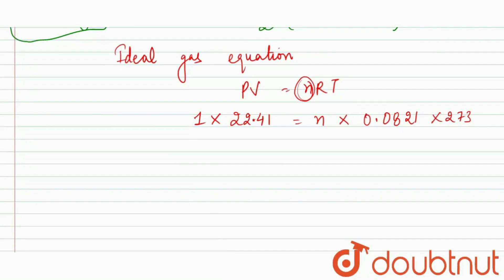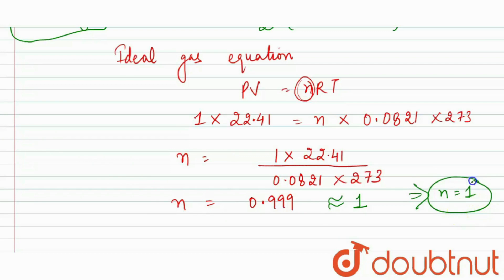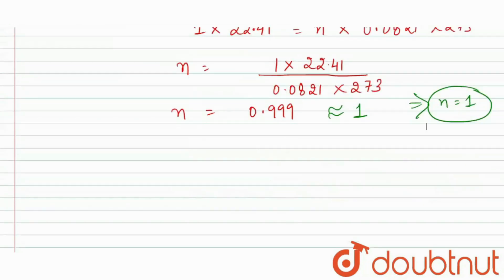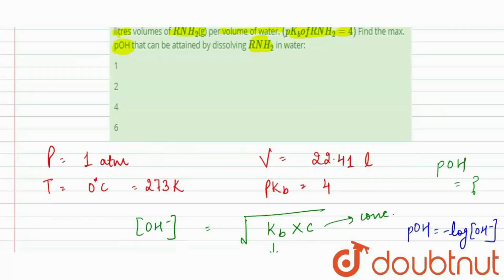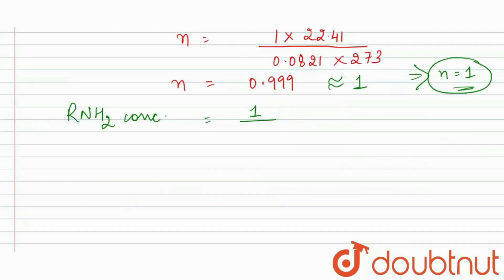From PV = nRT, n equals 1 × 22.41 divided by 0.0821 × 273, which gives approximately 0.999, so we consider n equal to 1. Since n = 1 mole dissolved per 1 liter of water, the concentration of RNH₂ is 1 mole per liter, which is 1 molar.